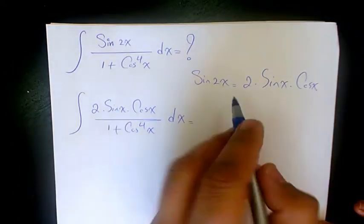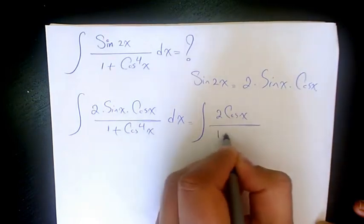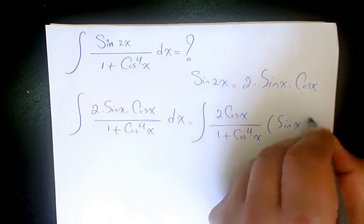Then you take the sine out, you have 2 cosine x over 1 plus cosine to the power of 4x sine x dx.